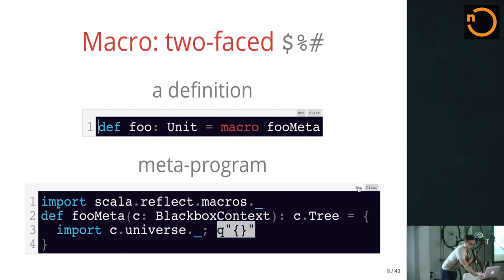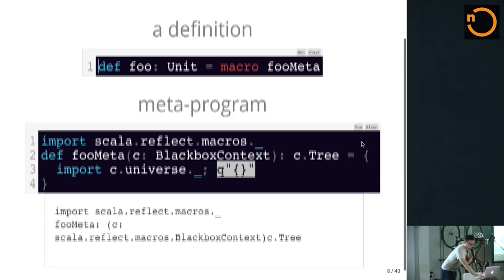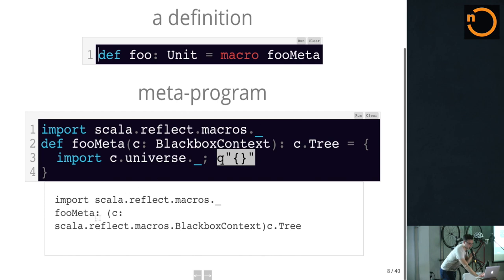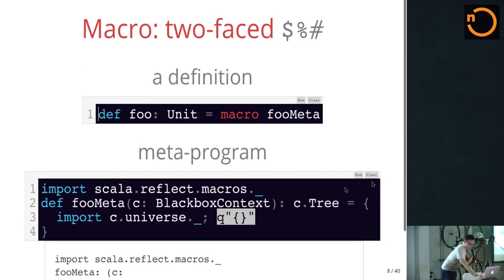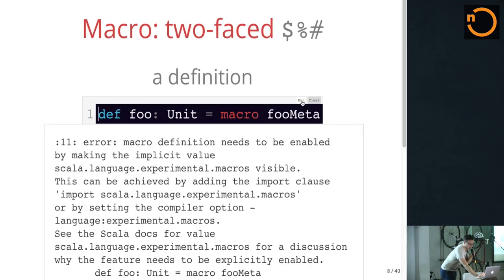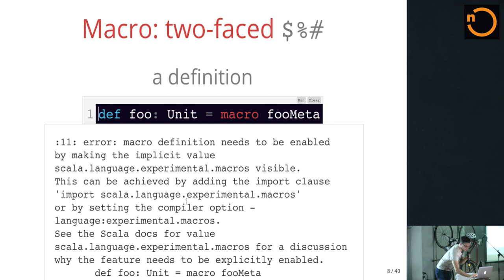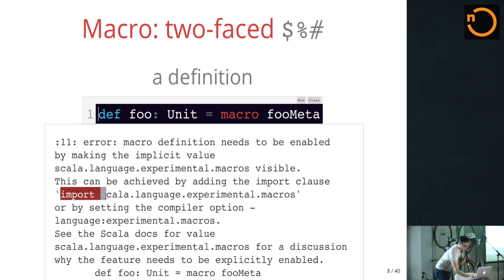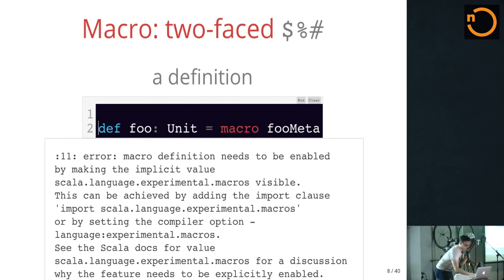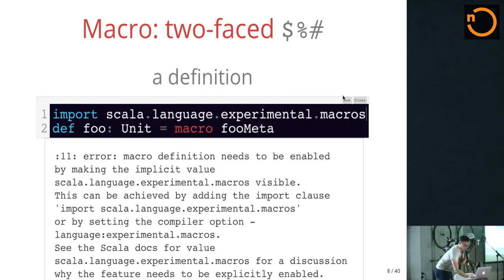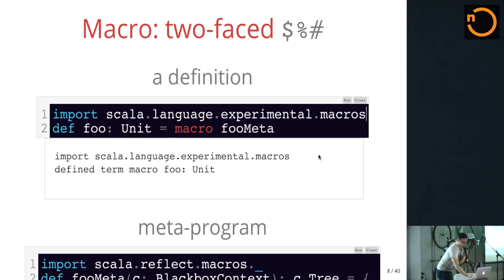So if I just run this and my computer isn't having some kind of weird problem, the REPL will start up and it'll say it defined this foo meta thingy for you. And, as I told you, macros are experimental. But we can fix that. I just left this in to prove that it's actually a REPL.